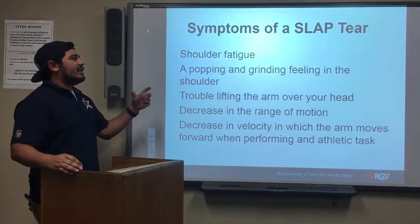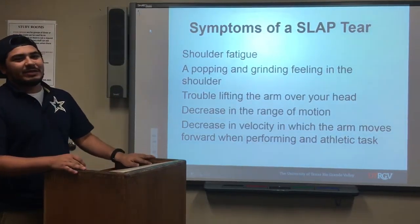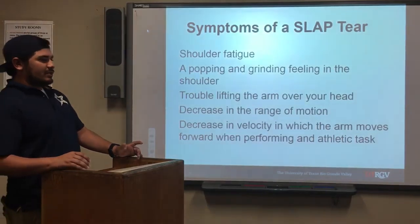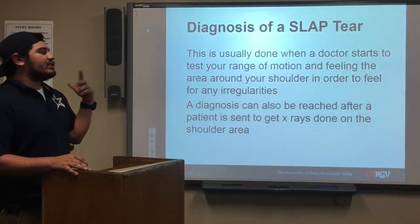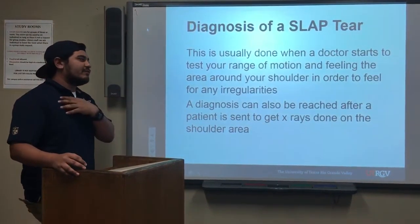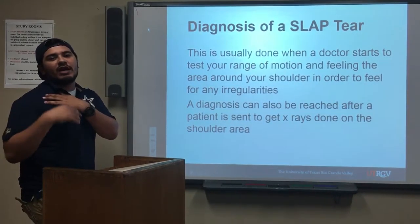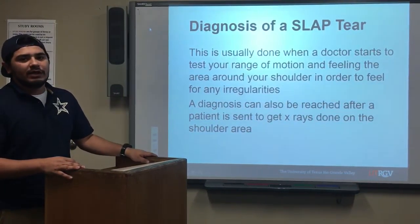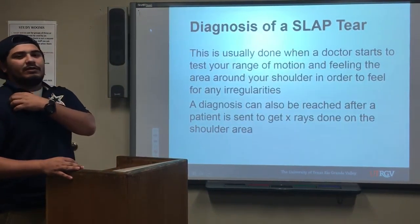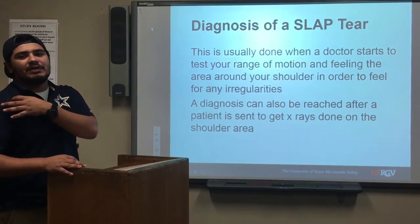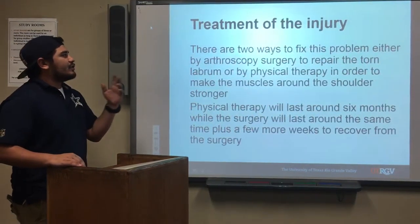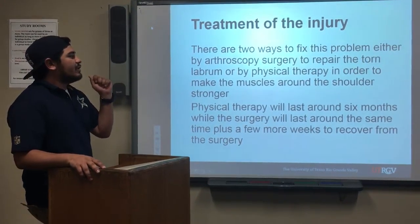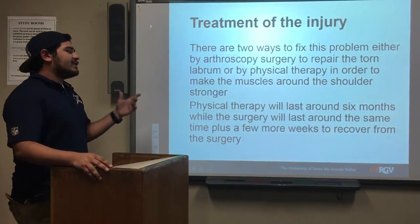Some symptoms are usually not present in most baseball players. Most of the time they won't feel it or know there's a SLAP tear, and they'll keep pitching. Eventually this tear is known as the pitcher's death because most of the time they can't come back from it and won't have the same velocity in their pitches. Diagnosis is usually done when a doctor tests your range of motion to see if anything is popping or grinding, then sends you for X-rays to confirm where the SLAP tear occurs.